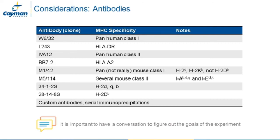A critical choice for experimental design is the antibody for the immunoprecipitation step. The most commonly used antibody is W6/32, because it has broad specificity across human class 1 molecules. There does not exist a comparable pan-class 1 antibody for mouse samples, although M1/42 pulls down several H2 molecules from the most common mouse strains. MHC class 2 specific antibody options are additionally available, but have not yet been optimized. These IPs can be performed serially to capture both class 1 and class 2, or multiple different alleles from the same sample.